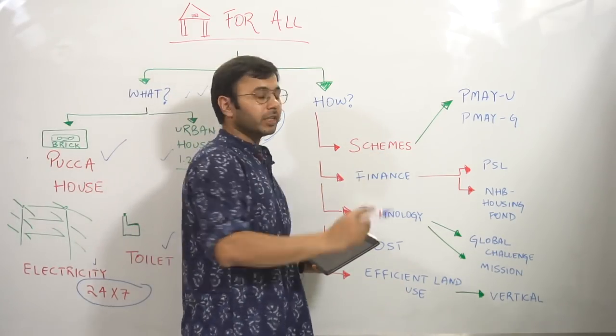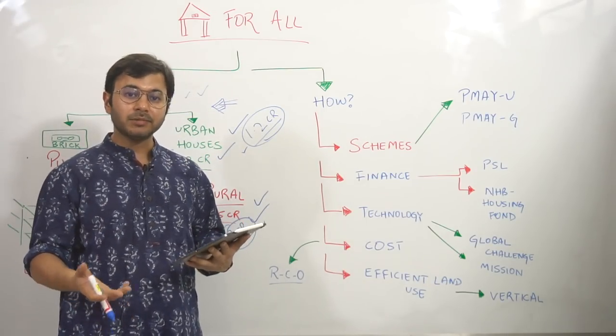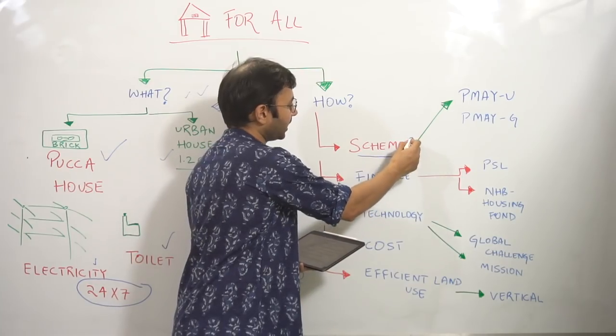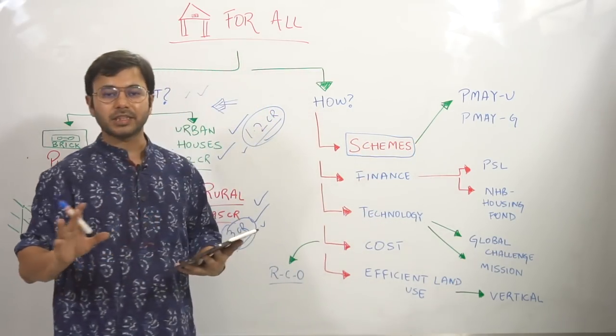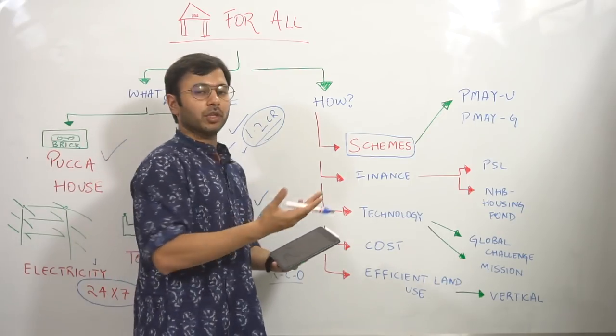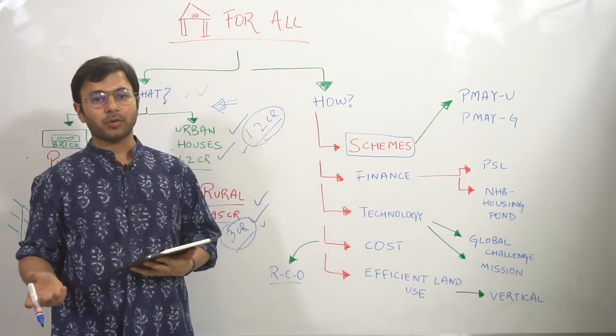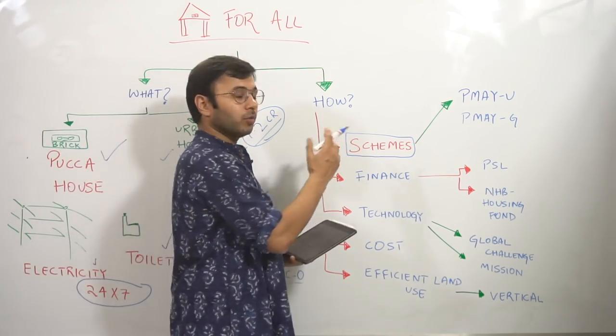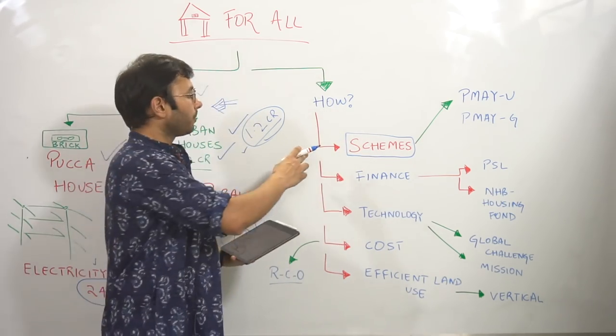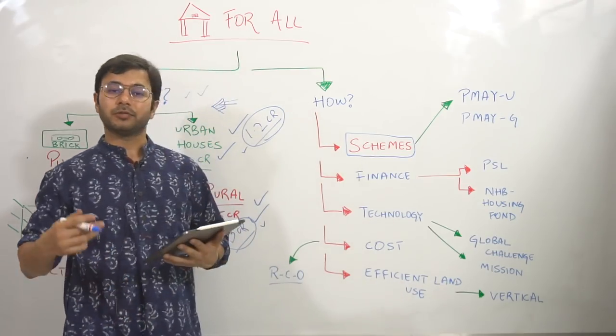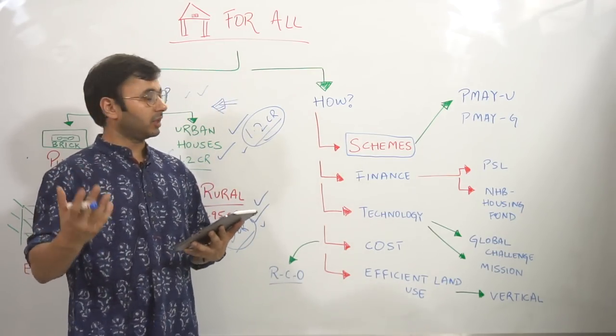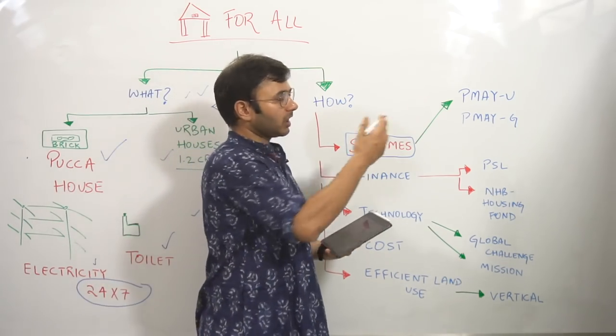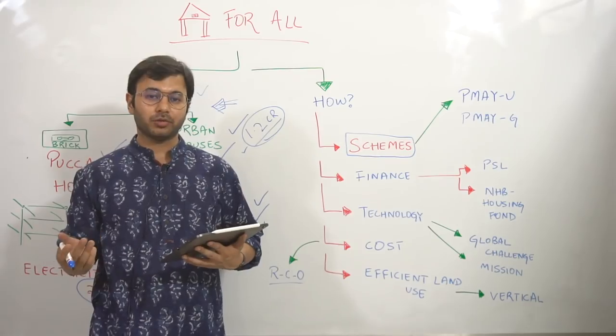So the first thing that you need to do is work upon these schemes. Create schemes and then work upon these schemes. Now the schemes part is static in nature because the government works through schemes only. So whatever problems, whatever social welfare initiatives the government wants to take, they all work through schemes. So the first objective or target or effort or initiative is going to be to create schemes and then to work through those schemes.